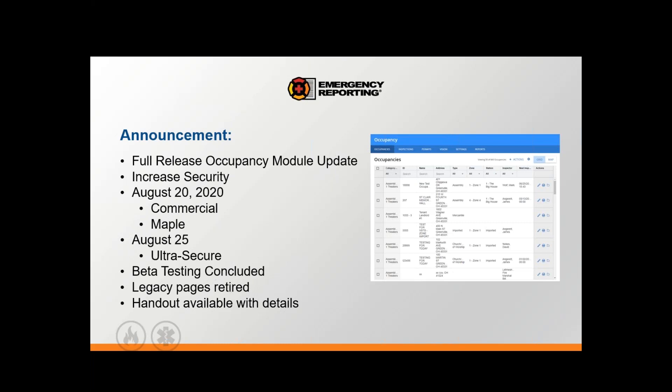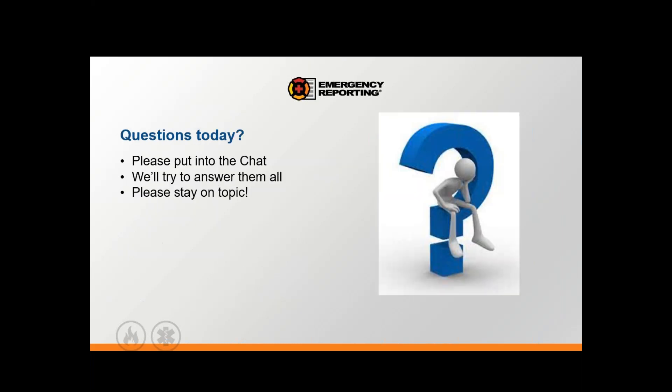August 25th, if you're an ultra-secure account — usually our Department of Defense accounts — that deploy happens on August 25th. One of the biggest reasons for the occupancy module update, in addition to adding new features, is the increased security in the architecture behind those modules. It increases our high security to an even higher level. All beta testing has been concluded. On the full release date, the legacy pages will be retired and you will not be able to go back to them.